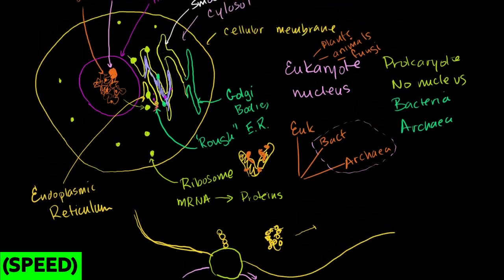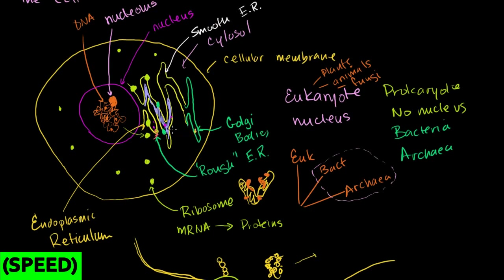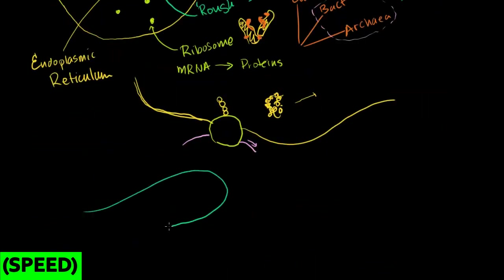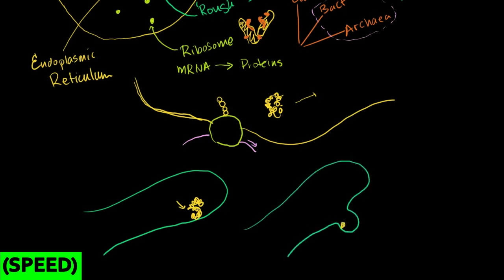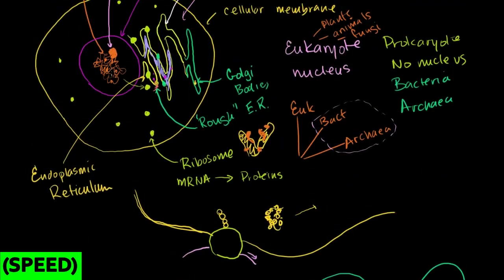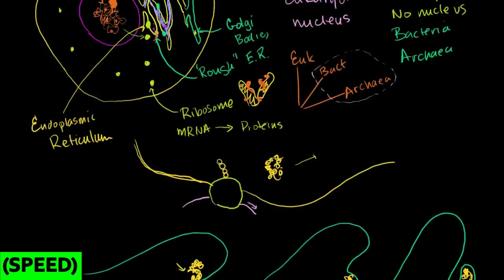I'm oversimplifying, but I want to give a sense of what everything in the cell does. Once the protein travels to the Golgi bodies, the smooth ER also has other functions — it helps produce hormones and fatty compounds. The protein travels through the rough ER, then the smooth ER, and connects to the Golgi bodies. In the Golgi bodies, the proteins can bud off and take a little bit of the Golgi body membrane with them.